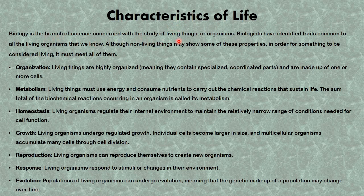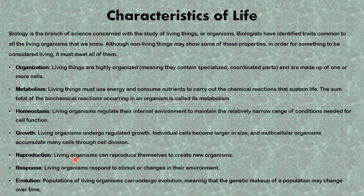Moving along, we'll be talking about the characteristics of life. Biology is the branch of science concerned with the study of living organisms. Biologists have identified traits common to all living organisms. For something to be considered living, it must meet all of them. First is organization — living things are highly organized and made up of one or more cells. Second is metabolism — living things must use energy and consume nutrients to carry out chemical reactions that sustain life. Third is homeostasis — the ability of a living organism to regulate its internal environment. Fourth is growth — living organisms must undergo regulated growth by increasing in size and through cell division.